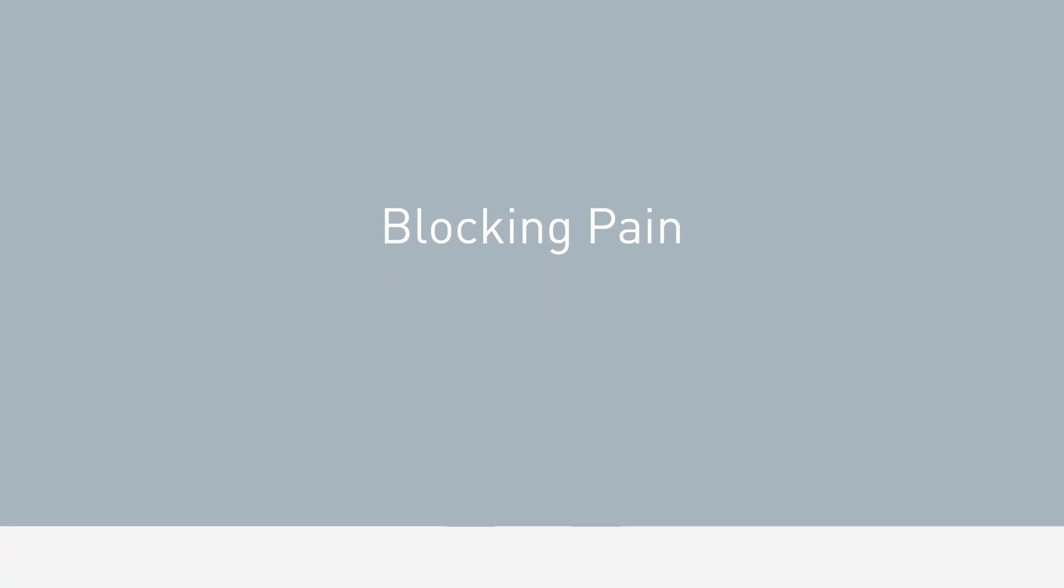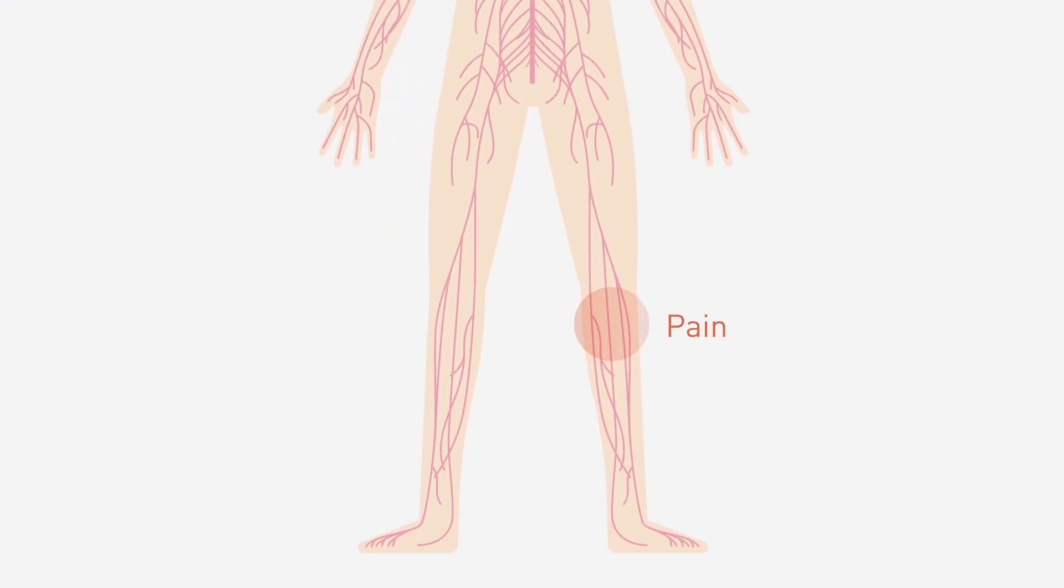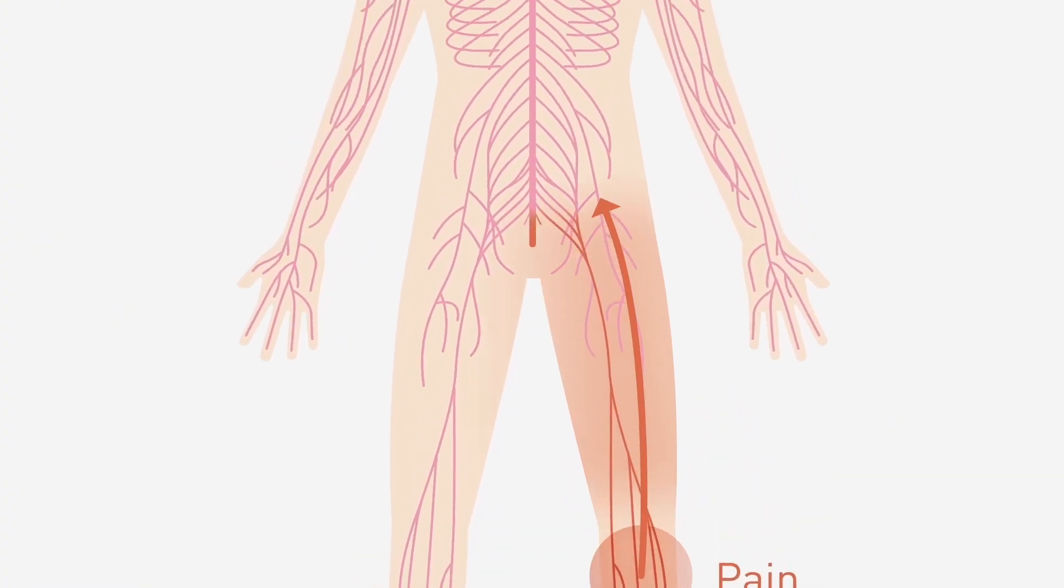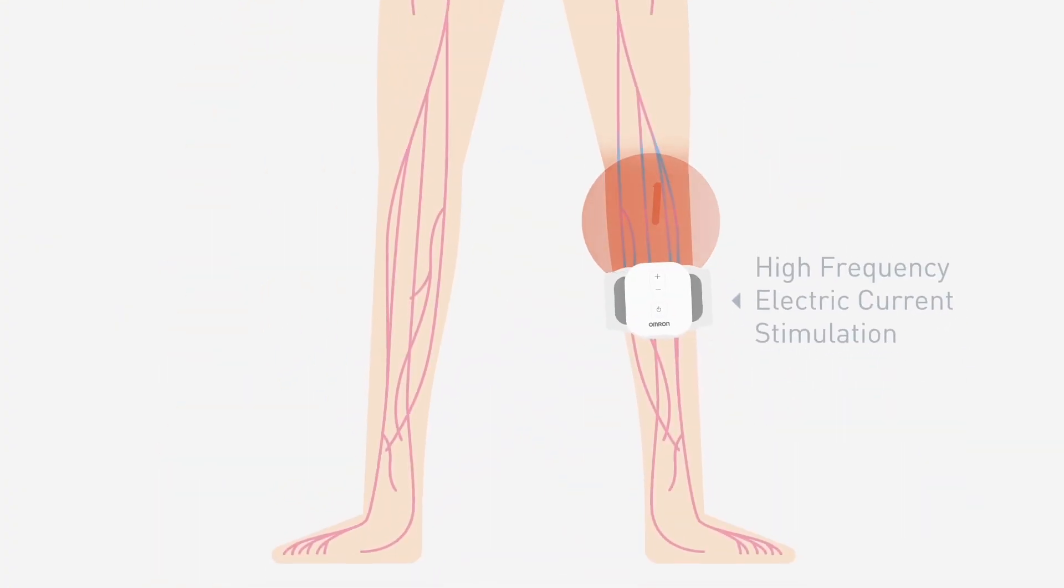Blocking pain: TENS units are believed to block the body's pain signals at their source. When you feel pain, a signal has been sent to your brain from the source of the injury. TENS therapy prevents that pain signal from getting to the brain, giving you powerful relief.